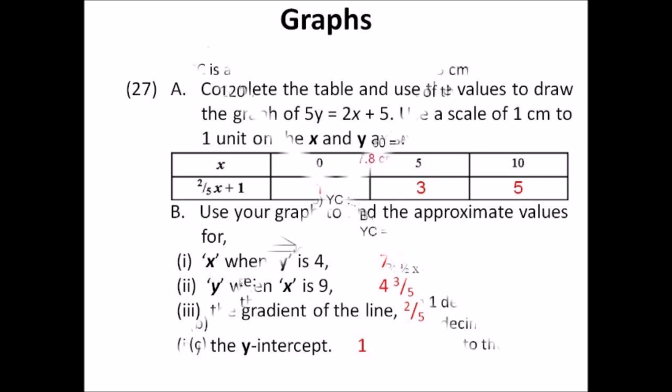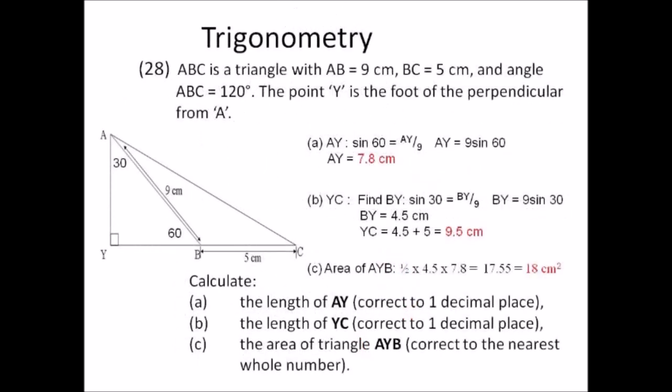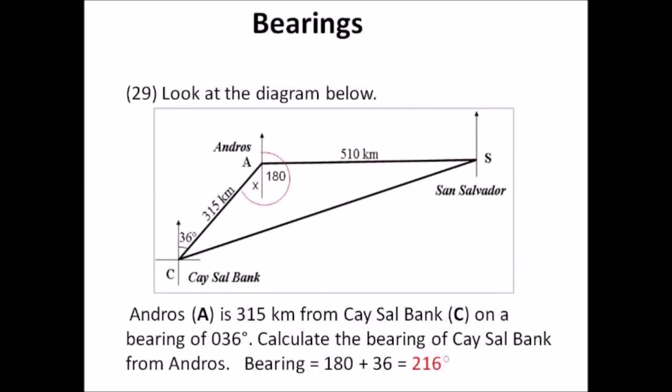Number twenty-eight: trigonometry. AY worked out to be 7.8 centimeters. The area of triangle AYB was 18 square centimeters — half times base times height using sine of 60 and sine of 30. Write your answers to the number of decimal places requested. Number twenty-nine: bearings. The bearing of Quiesel Bank from Andros is 216 degrees. The north line at Andros is parallel to the north line at Quiesel Bank, so the 36-degree angle repeats as alternate angles — 180 plus 36 equals 216 degrees.